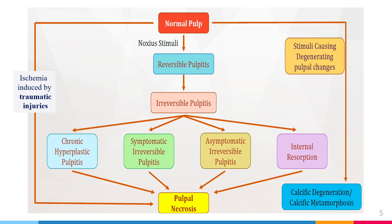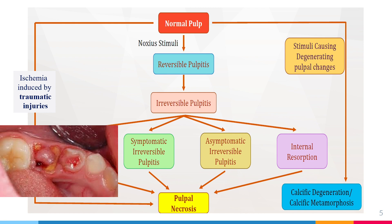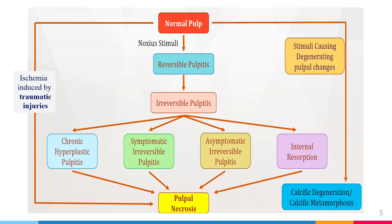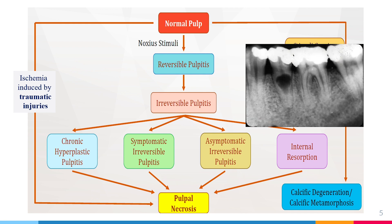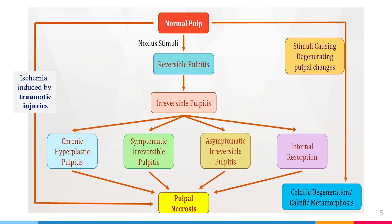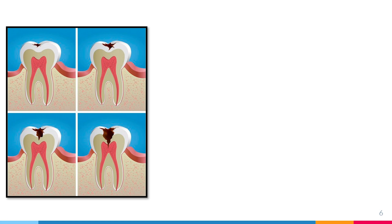When the pulp is affected by a noxious stimuli — anything that is an actual or potential tissue-damaging event — this can lead to reversible pulpitis in early stages, which if untreated progresses to irreversible pulpitis. Irreversible pulpitis is classified into four stages: chronic hyperplastic pulpitis (pulp polyp), symptomatic irreversible pulpitis with pain, non-symptomatic irreversible pulpitis where nerve fibers are dead and pain is absent, and internal resorption where osteoclastic cells eat up the dentinal tissue.